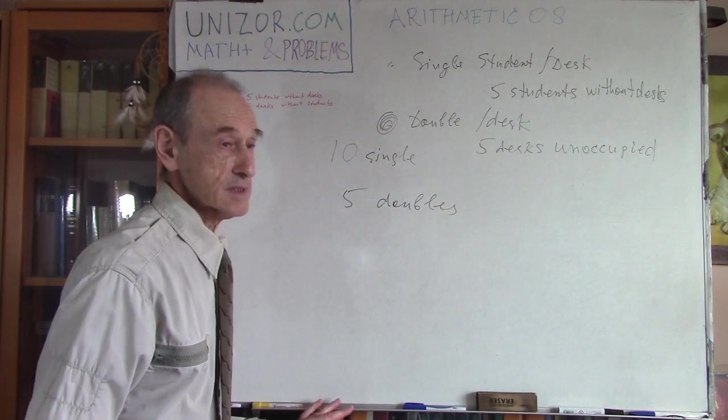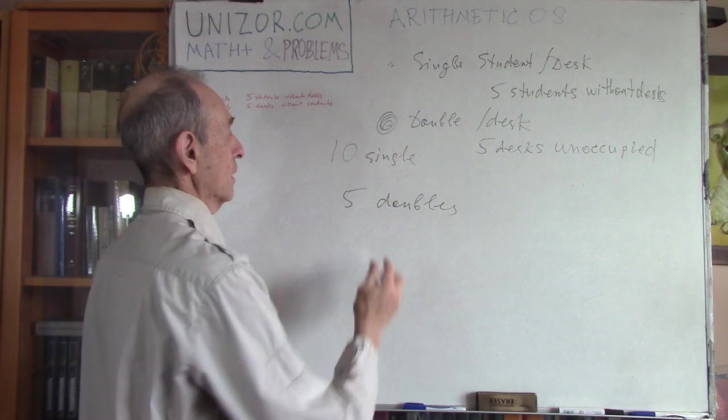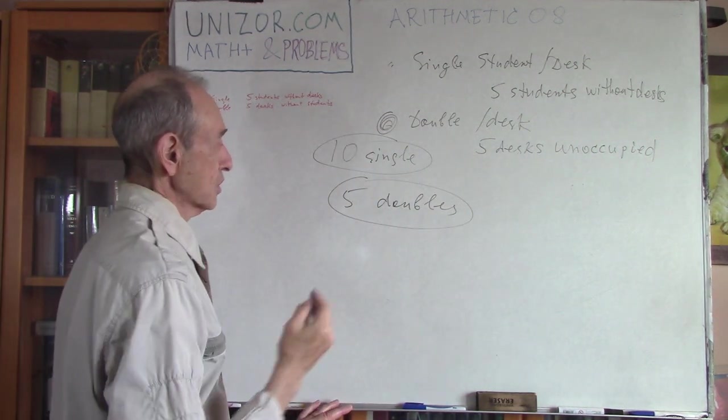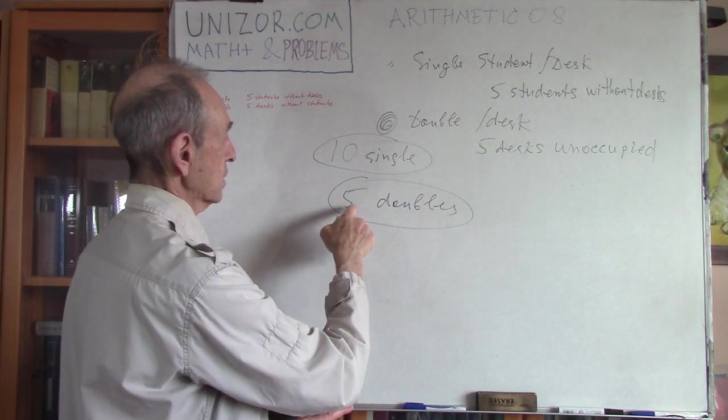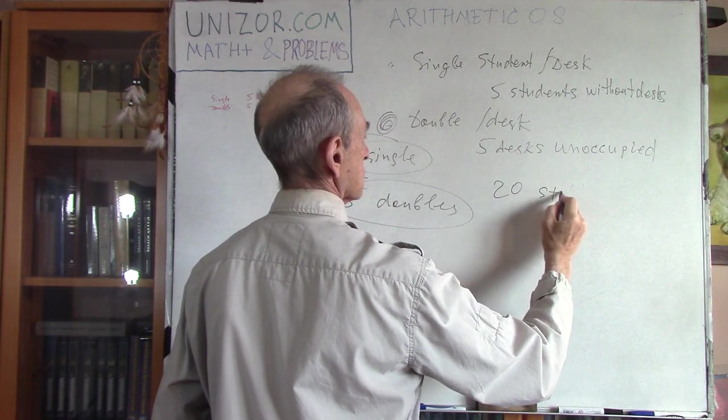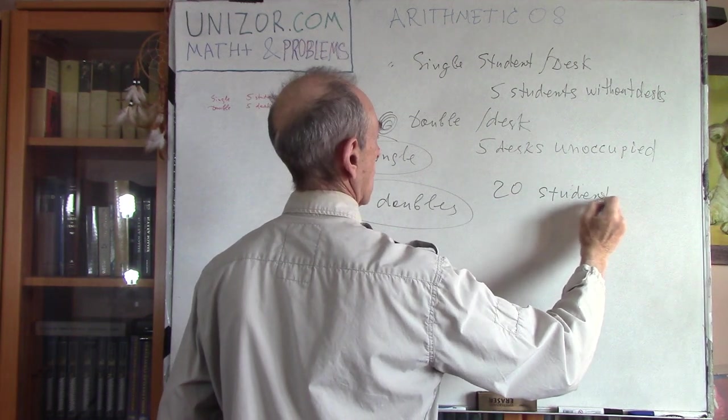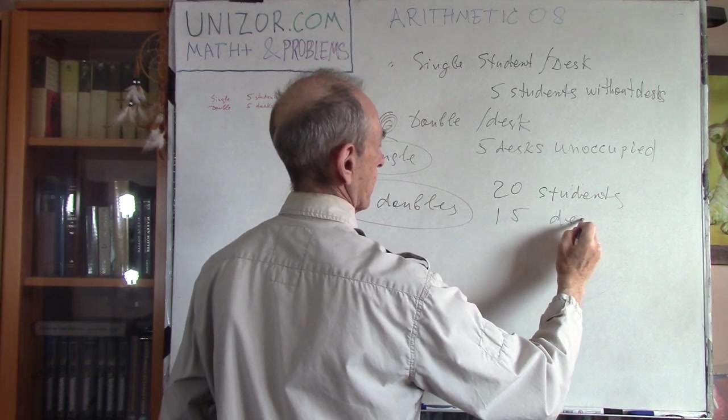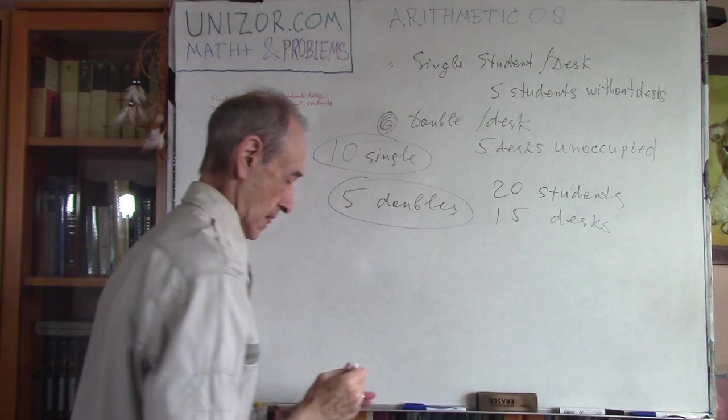So using one condition, we came up with number of singles. Using another, we have number of doubles. So basically, that's it. The problem is solved. You have five doubles, and you have ten singles. Which, incidentally, means that we have five doubles - twenty students, and ten plus five, fifteen desks.